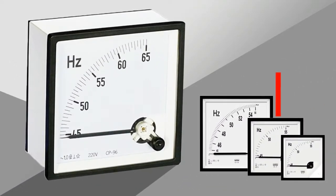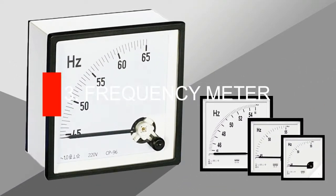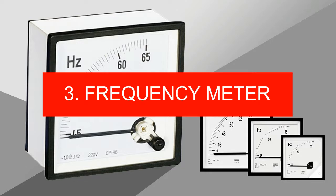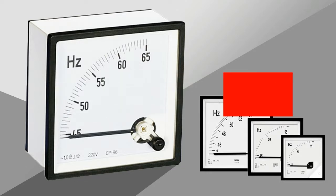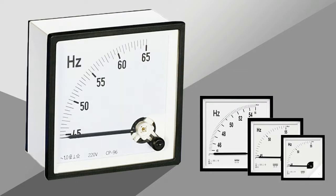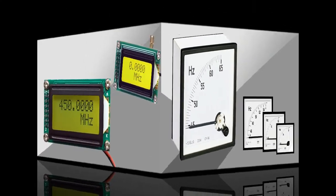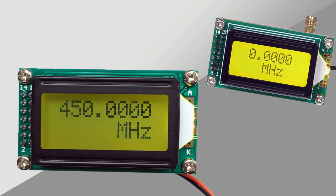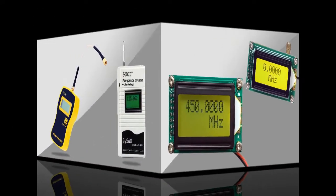3. Frequency meter. A frequency meter is an instrument that displays the frequency of a periodic electrical signal. Various types of frequency meters are used. Many are instruments of the deflection type, ordinarily used for measuring low frequencies but capable of being used for frequencies as high as 900 Hz.